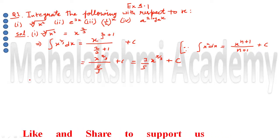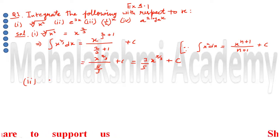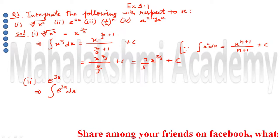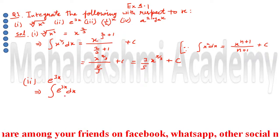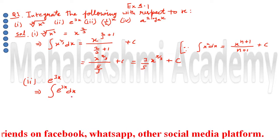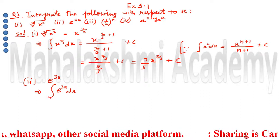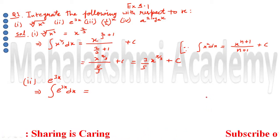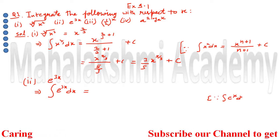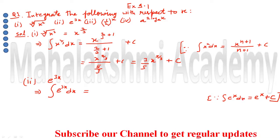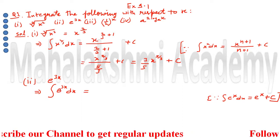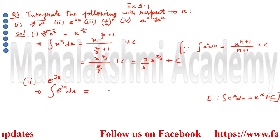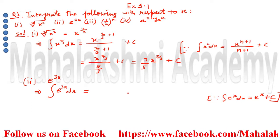Now the second part is e to the power 3x. When we integrate e to the power 3x with respect to x, we know the formula: the integration of e to the power x is simply e to the power x plus c. However, since it is 3x and not just x, we have to apply the chain rule. In integration, the chain rule comes in the divide rather than multiplication.